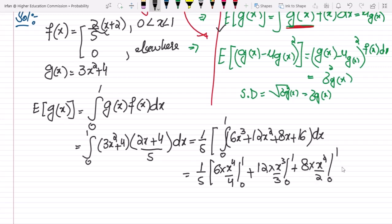Plus 16 times x from 0 to 1. Finding them all and ultimately calculating it, the answer is 5.1 and this is mu of g of x.